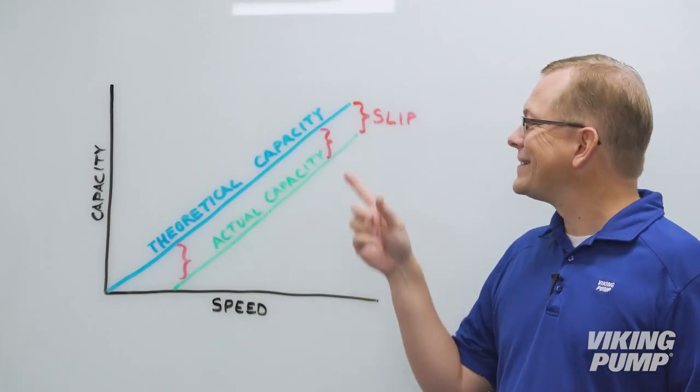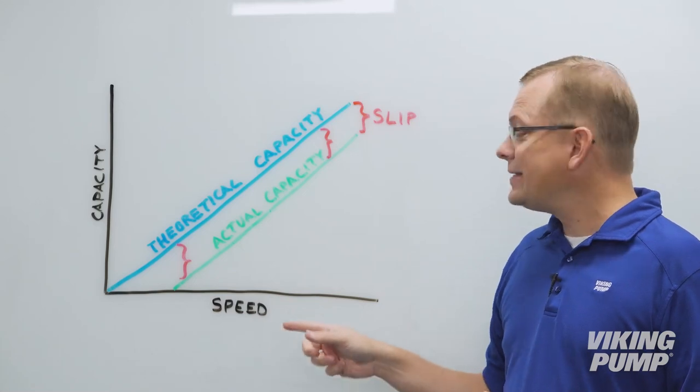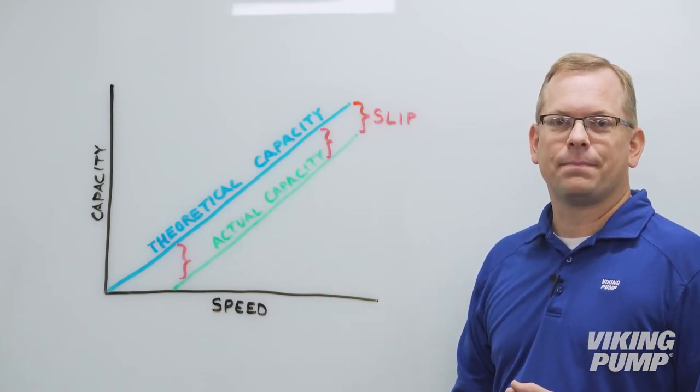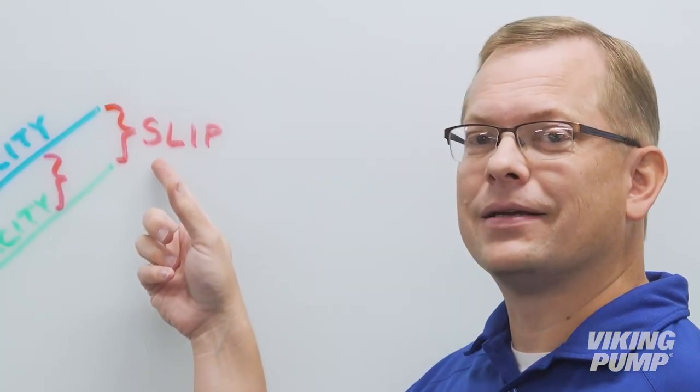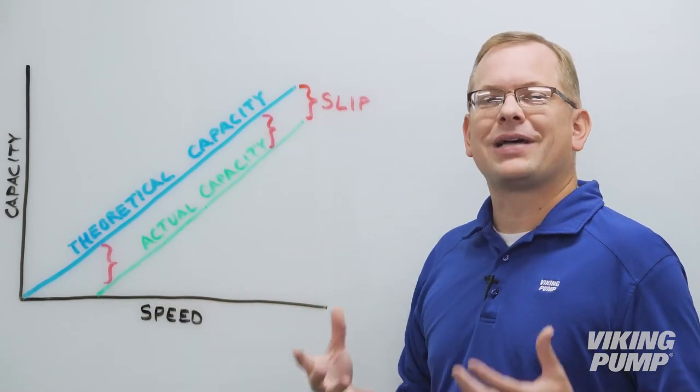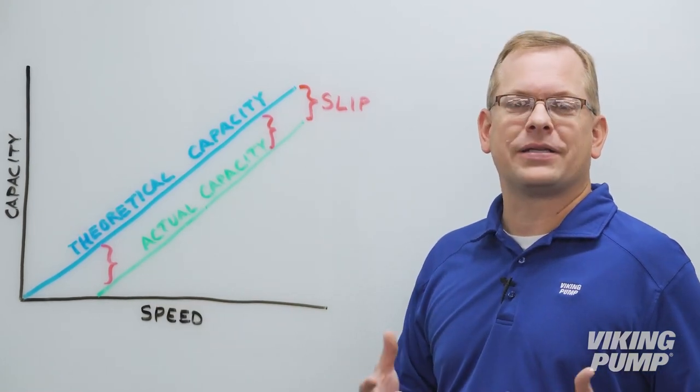It's important to remember that slip is a constant. It's independent of speed, and it stays the same as long as the other variables stay the same. And since slip is constant, it's important to remember that as we move left on the curve and slow the pump speed, it becomes a higher percentage of the overall capacity of the pump.